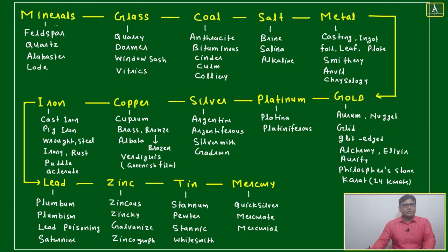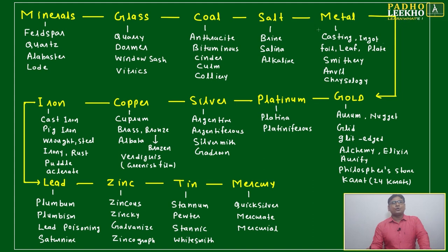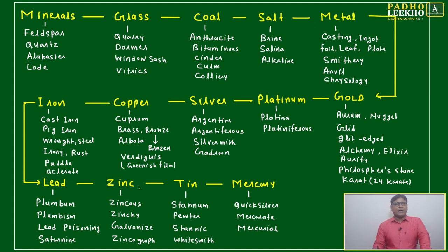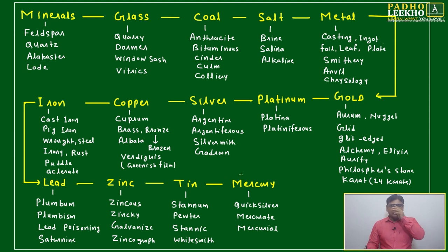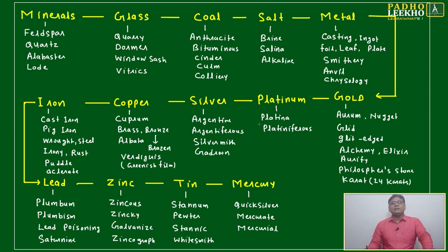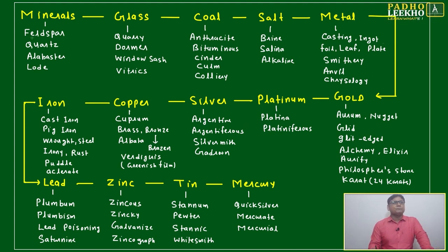We have a flow diagram to understand minerals in a better way. Minerals include glass, coal, salt, and metal. Under metal: gold, platinum, silver, copper, iron, lead, zinc, tin, and mercury. These are minerals we use in daily life. You will encounter these words and vocabulary in your reading comprehension or verbal section.